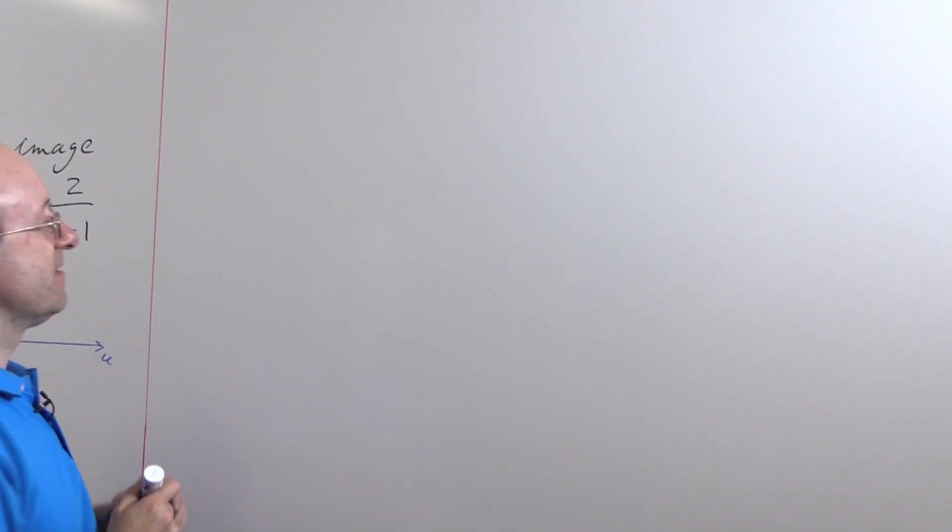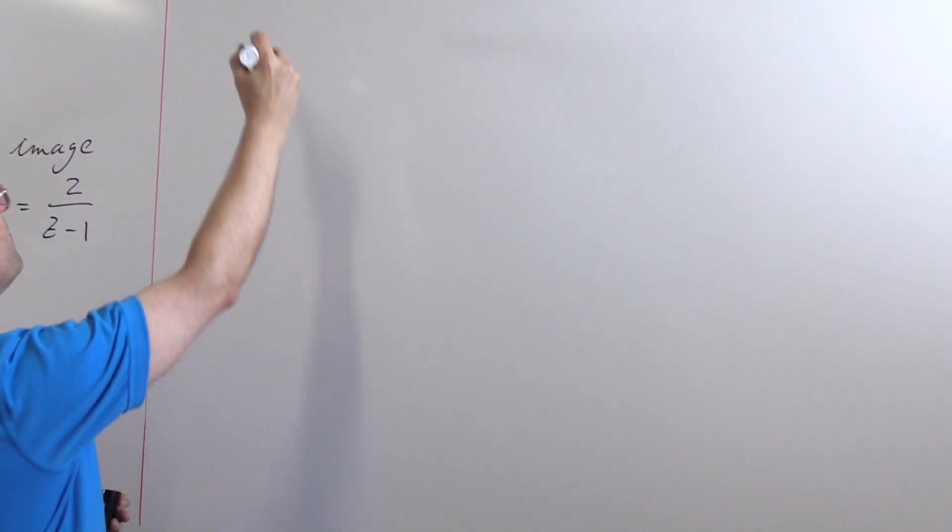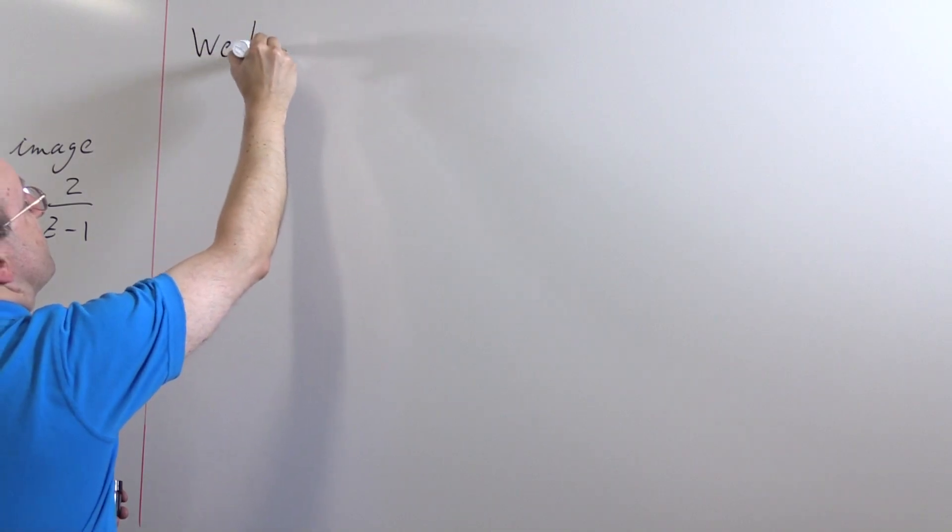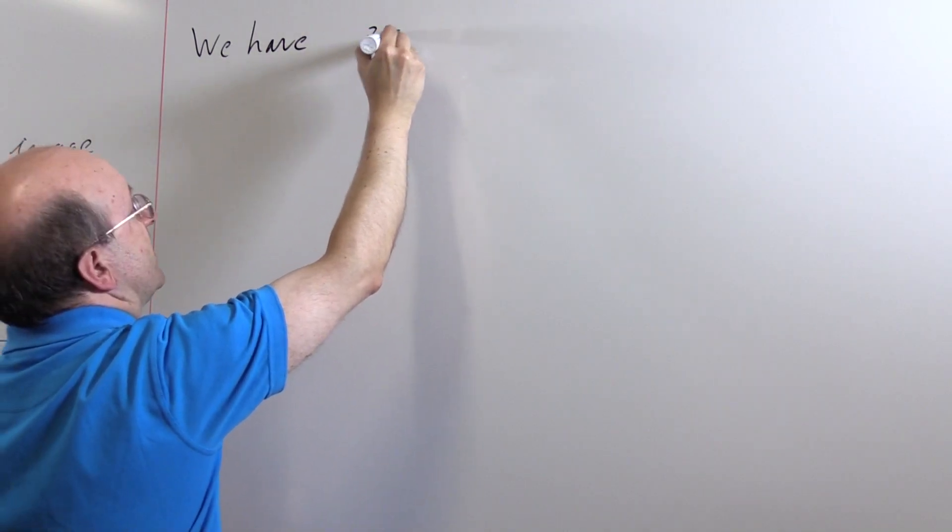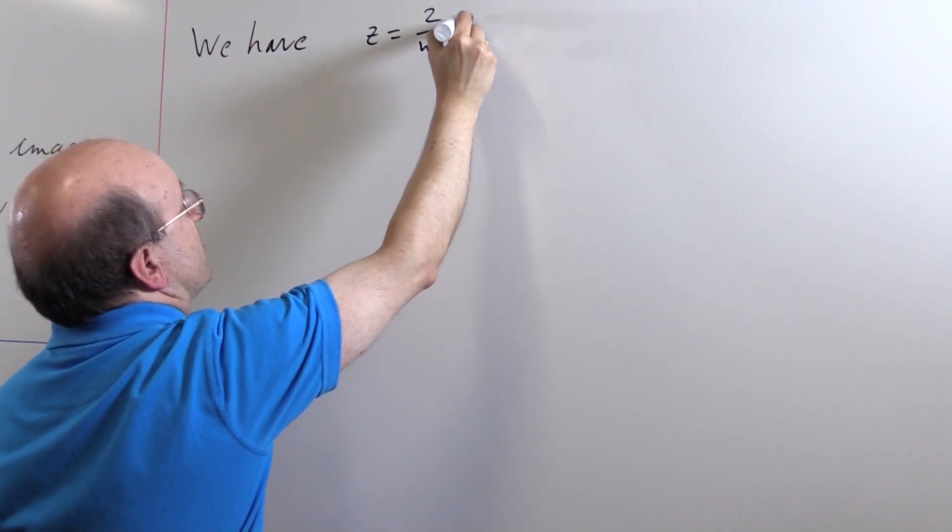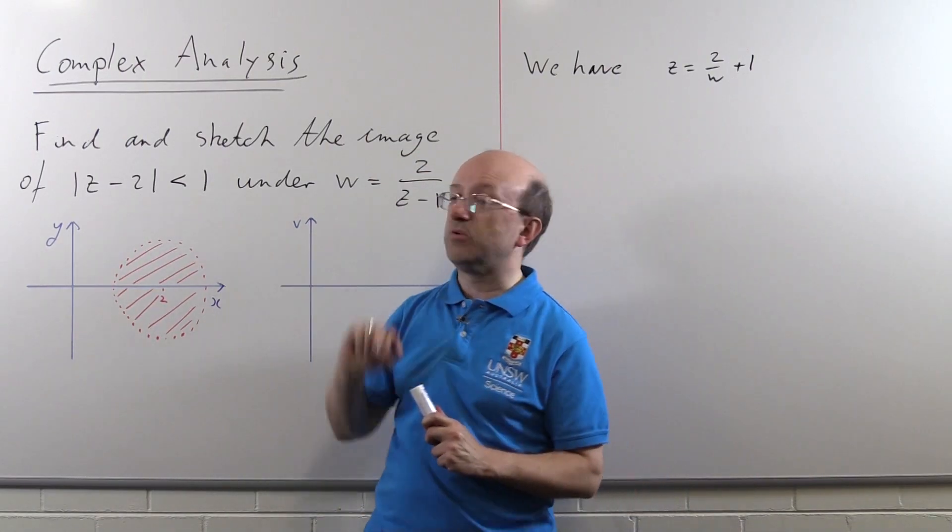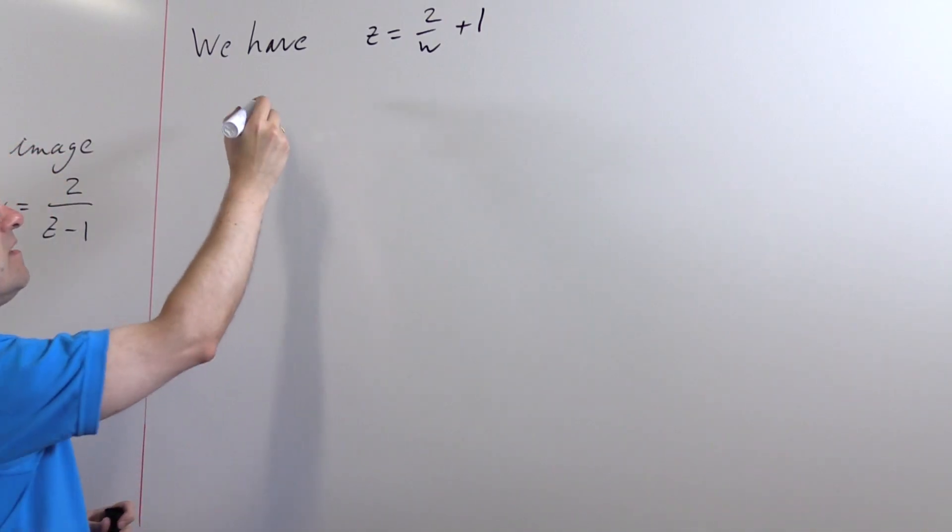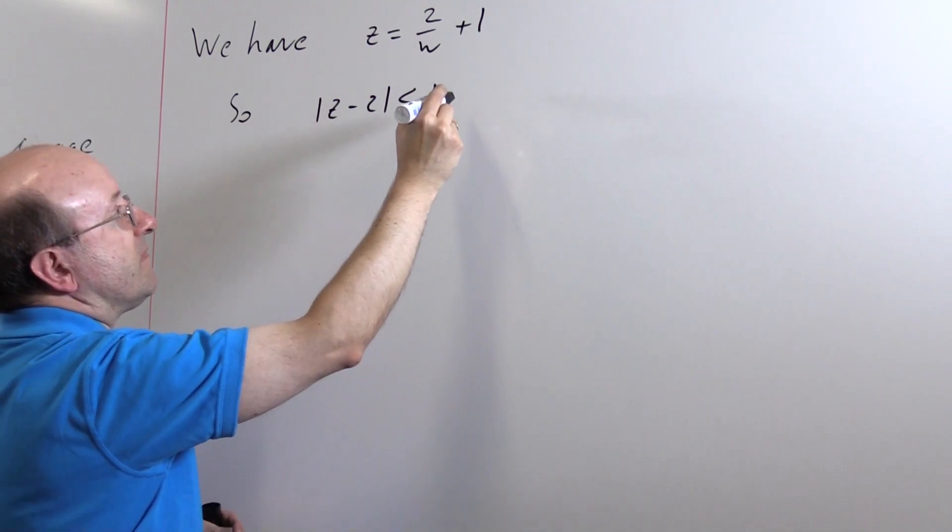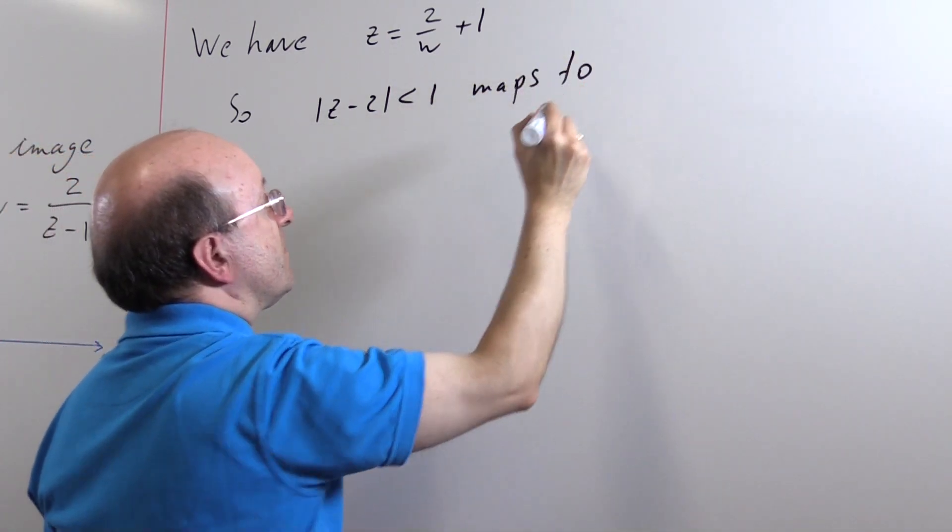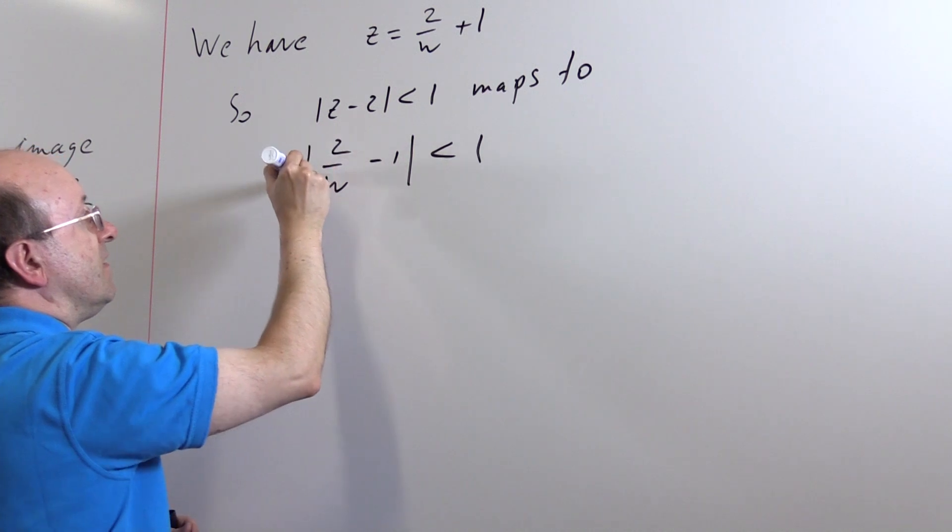The first thing we'll do is rewrite our function as a function of w. So we're going to solve that equation for z. So we have, while cross multiplying, we see we get z - 1 is equal to 2/w. So z is 2/w + 1. What we then do is we take that expression for z as a function of w and just put it in to the restriction.